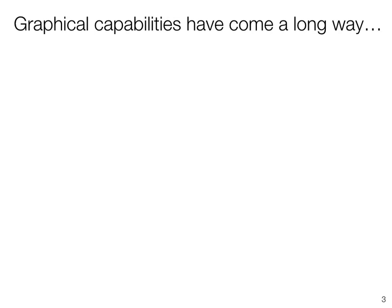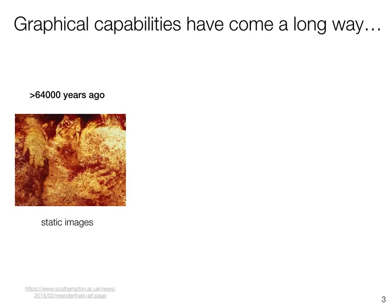Let's start with a bit of history. Graphical capabilities have come a long way over the span of humankind. Static images have been found in caves in Spain originating from over 64,000 years ago. These drawings contain paintings of groups of animals. There are geometric symbols and signs included, as well as hand stencils, which really pop out in this image here.